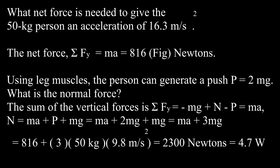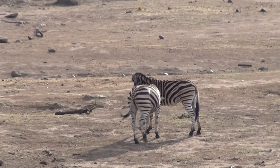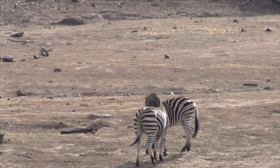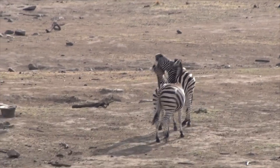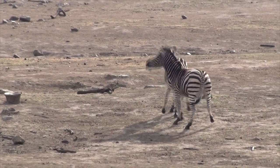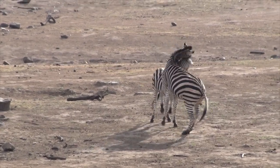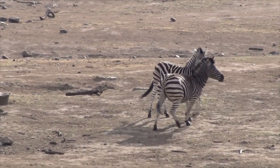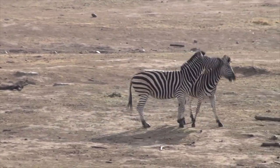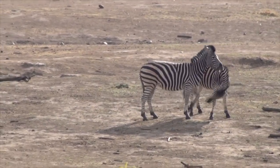If the person stood on a bathroom scale and then jumped, the bathroom scale would read 4.5 times the weight of the person. Biologists put scales under the feet of every kind of walking and jumping creature, from insects to zebras, to measure forces.